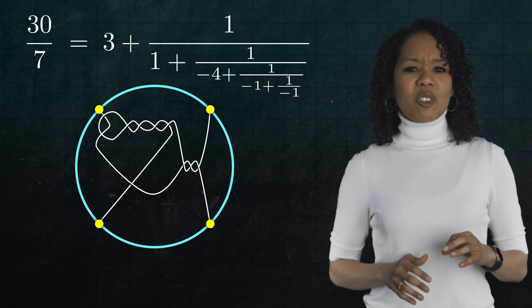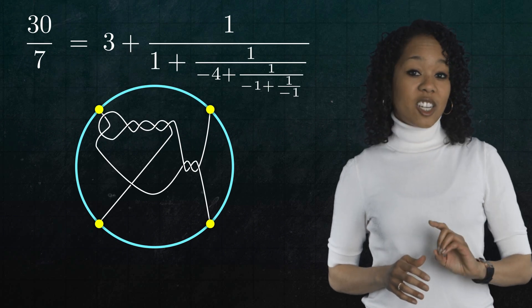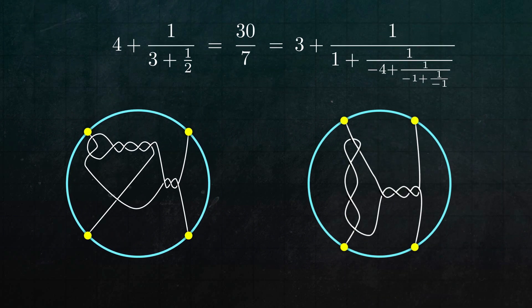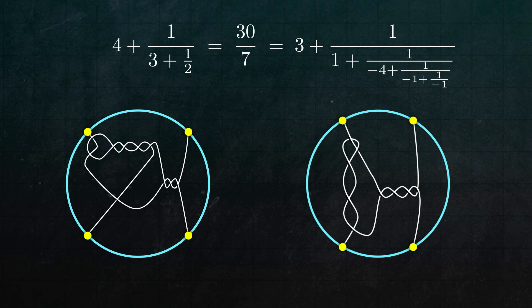Now here's the rational tangle corresponding to that continued fraction. And here's the rational tangle corresponding to the first one. And because their two fractions are actually the same, you'd really hope that those two tangles are the same too. And it's true, they are. They're the same in the sense that you can actually get from one tangle to the other without, number one, tearing the strings, or number two, moving any of the four endpoints.